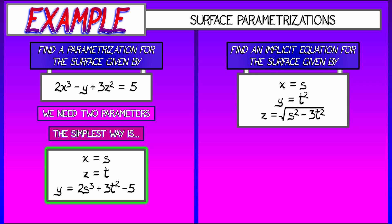Find an implicit equation for the surface that is given parametrically by the following: x equals s, y equals t squared, and z is the square root of s squared minus 3t squared. Now, when I look at what's under that square root, I can see a t squared, which I could replace with y. I can see an s squared, which I could replace with x squared.